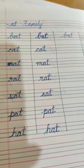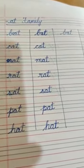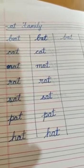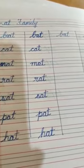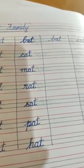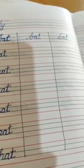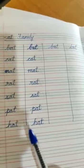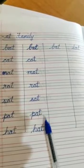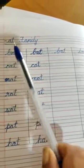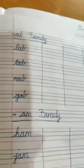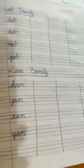I will be sending you a video of how to pronounce each and every alphabet. Now, let us continue with these words — three-letter words with the AT family. Let us go on to the next page.